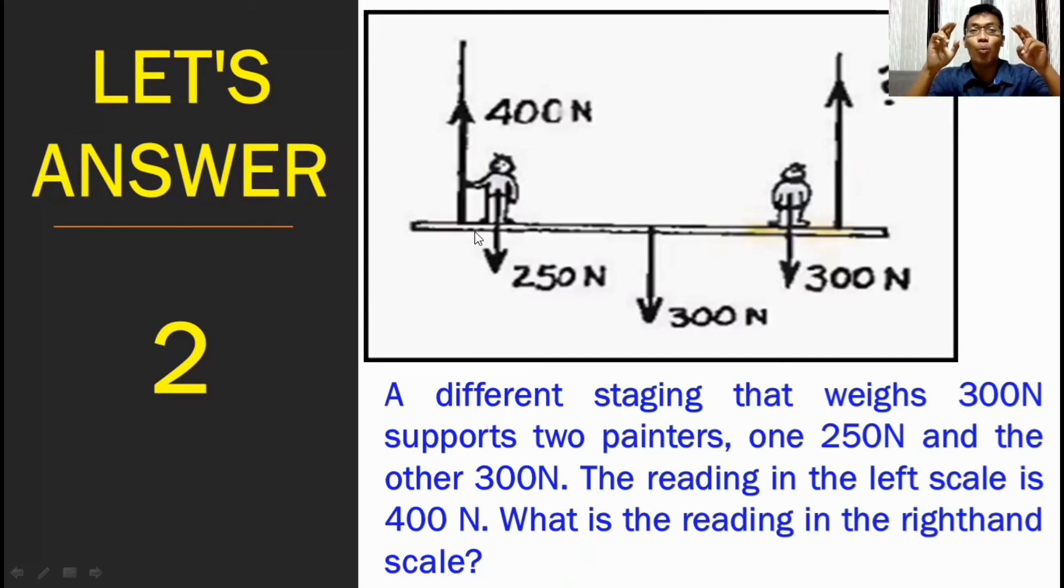And again, this is the weight of the two person and of the stage. Yung person sa left side is 250 newton. While the person on the right side ay medyo mas mabigat, which is 300 newton. Ang stage ay 300 newton din. Then, ang kailangan natin malaman ay yung tension ng rope on the right side. So, if the tension on the left side is 400 newton, paano natin kukombyutin ito? We will begin first by adding all the weights.